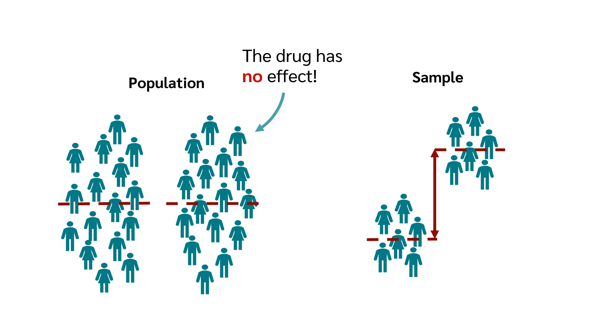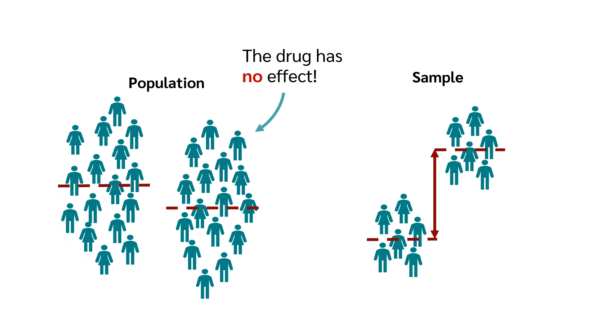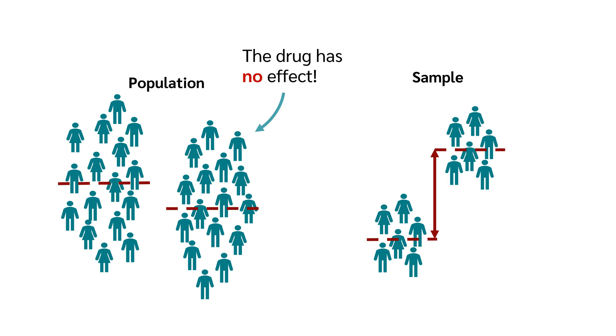If this probability is very low, we can ask ourselves, maybe the drug has an effect in a population and we may have enough evidence to reject the null hypothesis that the drug has no effect. And it is this probability that is called the p-value.